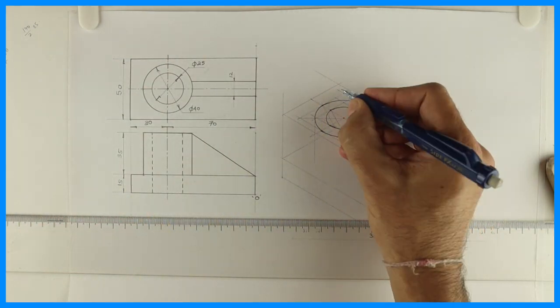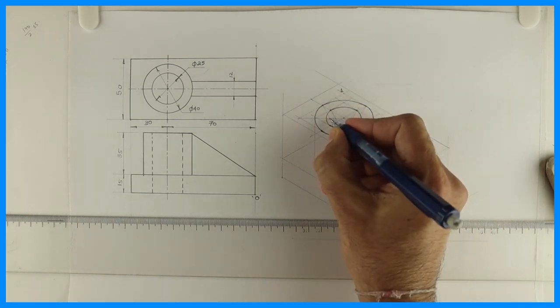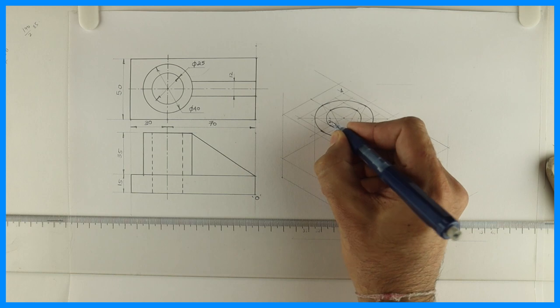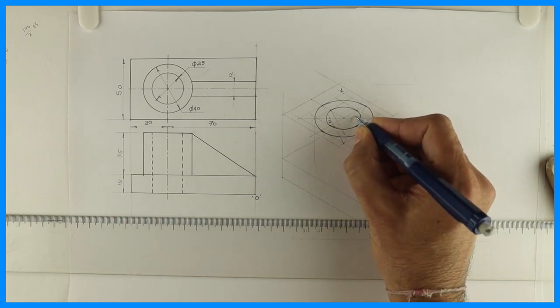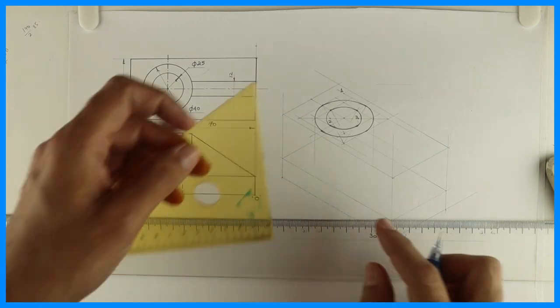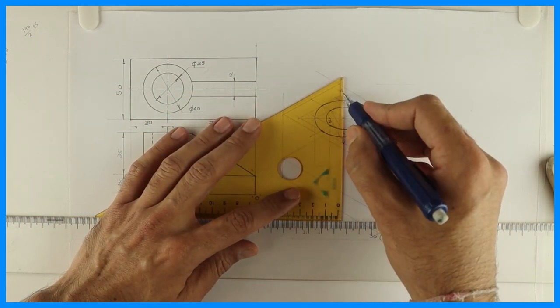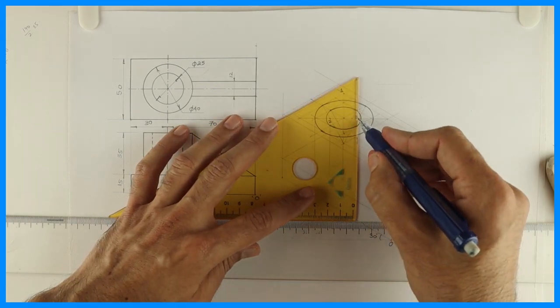So let's say this point is 1. Right? This is 0.2. And this is 0.3. This is, I am talking about the bigger circle. Diameter 40. Right? We have to go down by how much? 35. So take 0.2 down by 35. 1 down by 35. And 3 by 35.